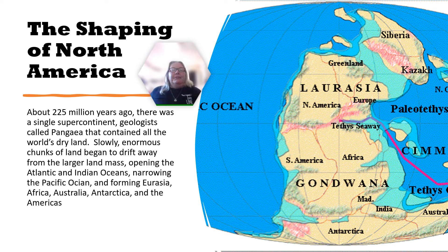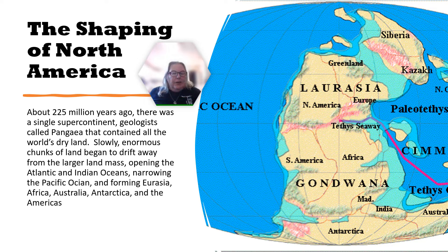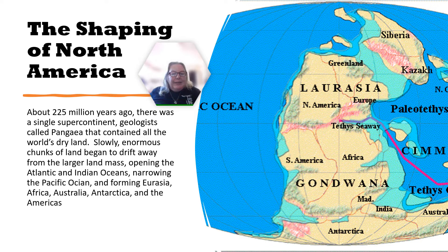The shaping of North America: about 225 million years ago, there was a single supercontinent geologists called Pangea that contained all the world's dry land. Slowly, enormous chunks of land began to drift away from the larger landmass, opening the Atlantic and Indian Oceans, narrowing the Pacific, and forming Eurasia, Africa, Australia, Antarctica, and the Americas.